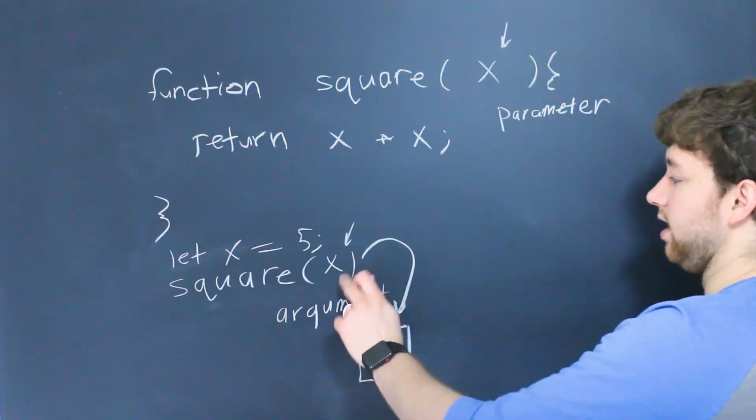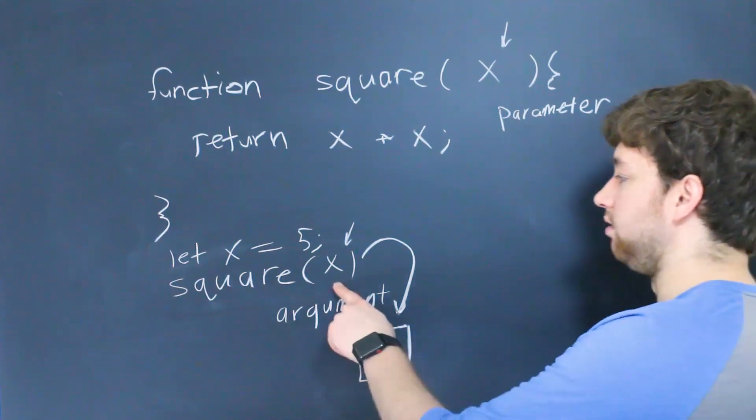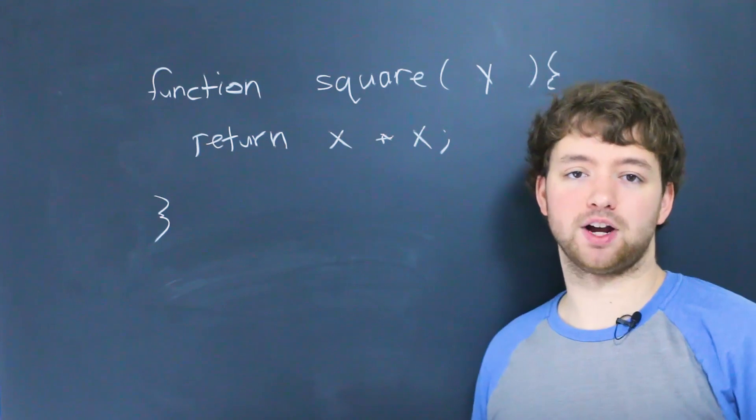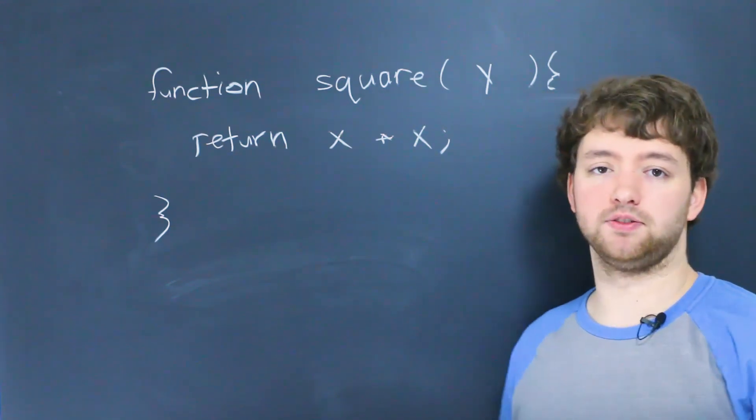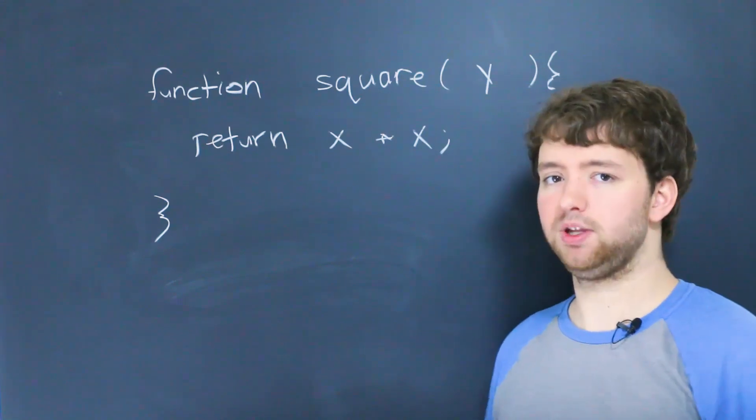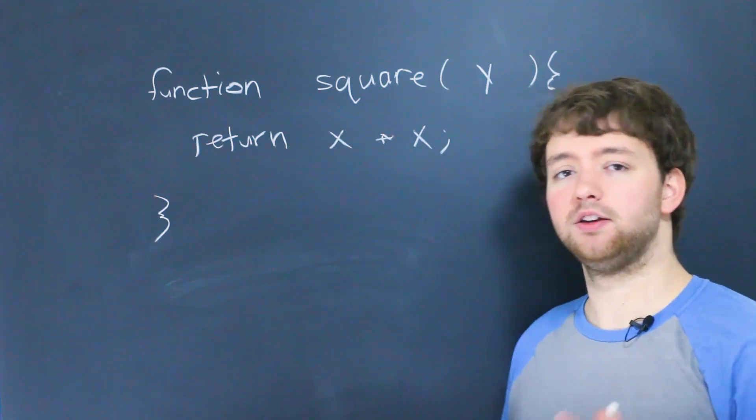So the value of x gets passed into this variable x. Now, one thing about JavaScript is it's very flexible when it comes to functions. So when it comes to arguments, you can pass less arguments, you can pass more arguments, and so forth.